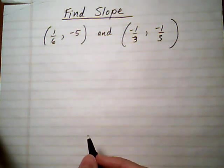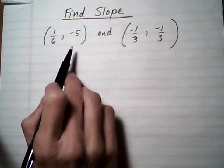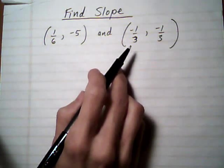We're going to work out a couple of problems here where we're trying to find the slope of a line that's going through two points that are given to us, and the points are going to contain fractions.